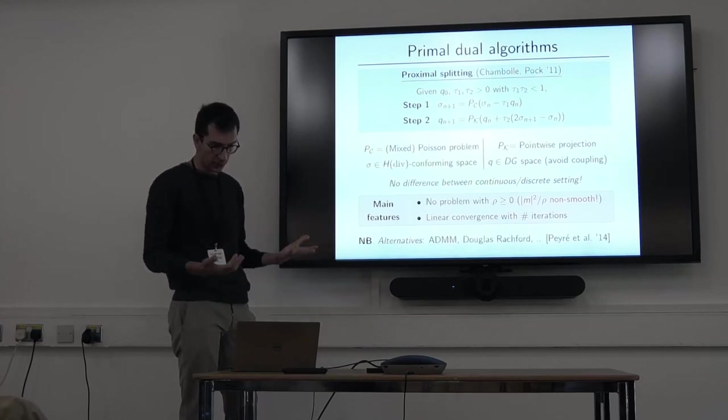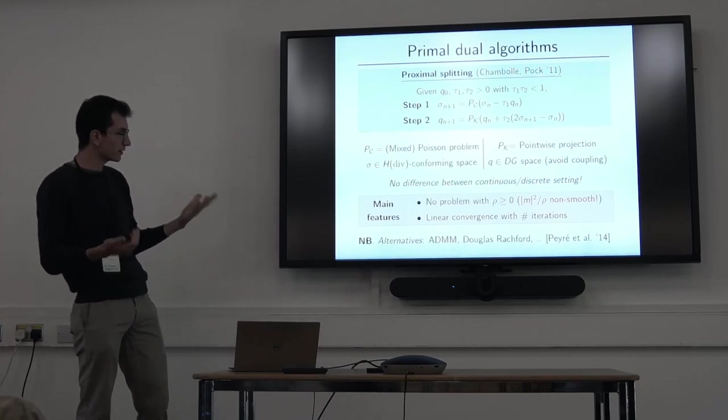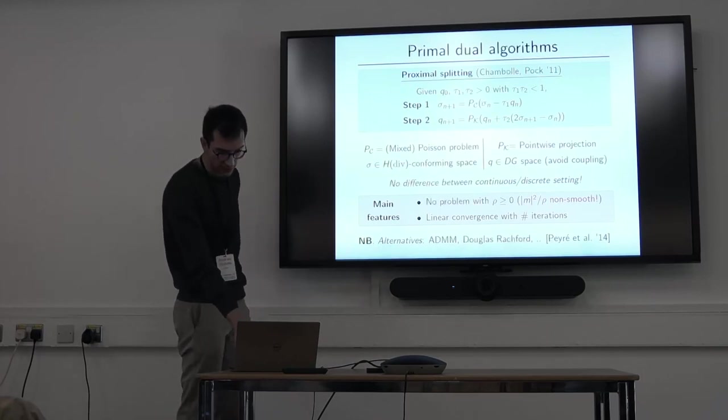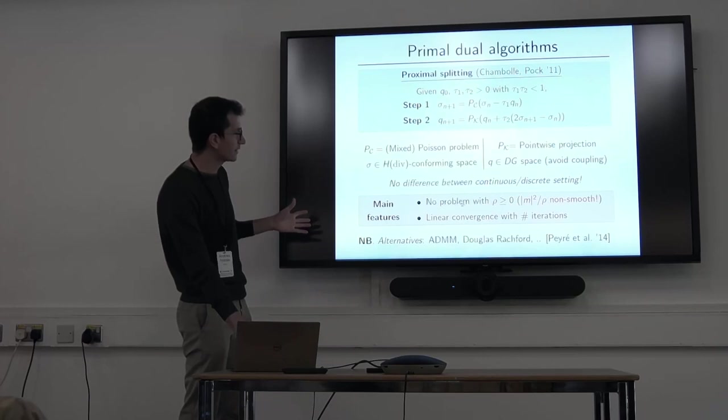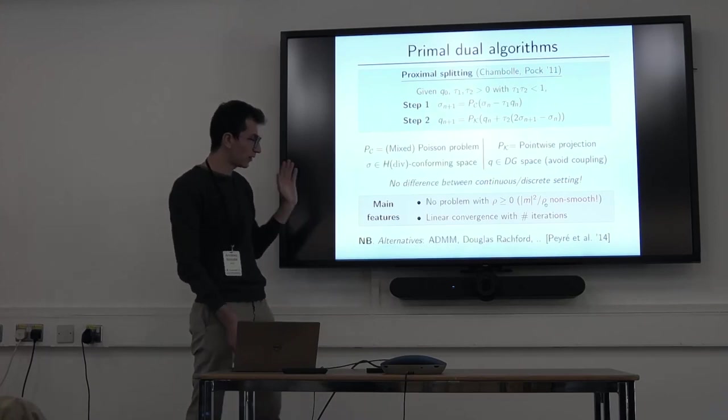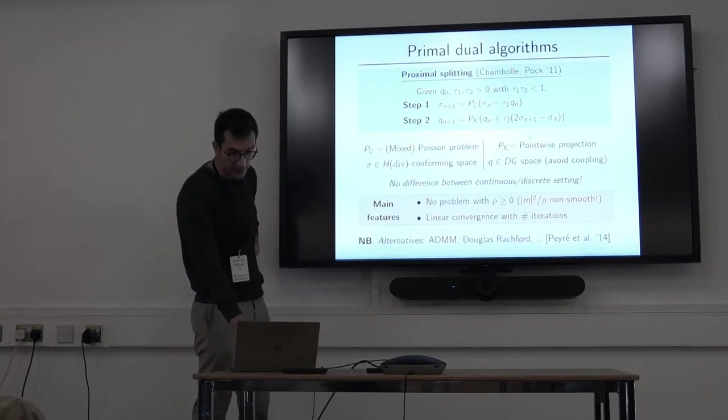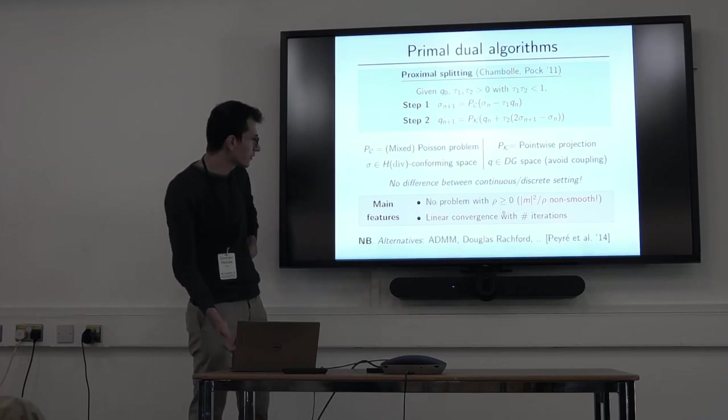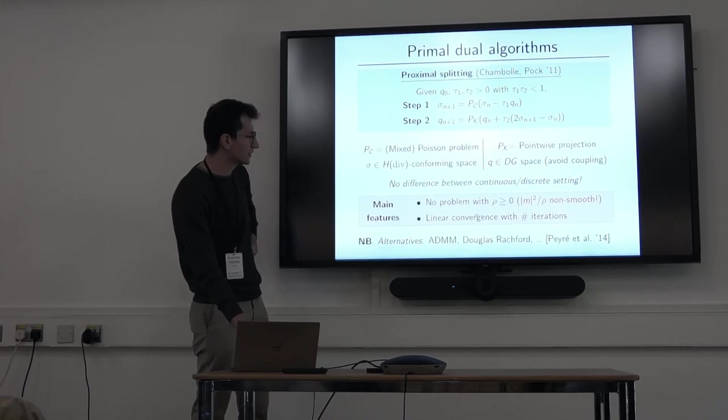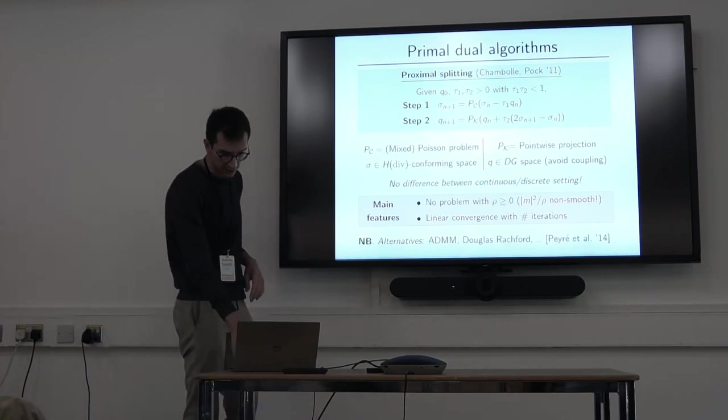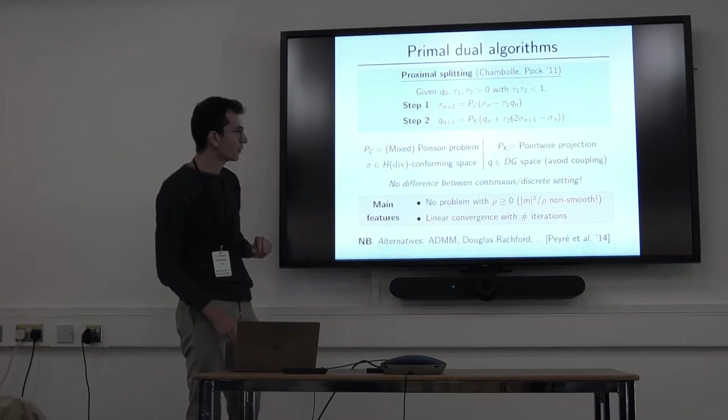So in principle, you would want to have sigma in some H-div-conforming space. And this other one is somehow a pointwise projection, because I said the constraint is imposed pointwise. And since this is going to be an L2 projection, we don't want to have coupling between the degrees of freedom. So it means that it's good to have something that's really implementable. You want to use some discontinuous Galerkin space. The next thing, so the approach is first discretize and optimize. And in fact, also in terms of the algorithm, there's really no difference between the algorithm in the continuous and the discrete setting. And this also leads us to have a convergence result for this algorithm in the discrete world. And the main property is that here you don't see the fact that the function that we are trying to optimize is a non-smooth function.